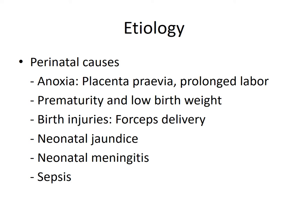The third part of congenital causes is perinatal causes — that is, anoxia during birth, also called birth asphyxia. It can be because of placenta previa, prolonged labour, or cord prolapse, leading to hampered blood supply to the inner ear and brain. Similarly, prematurity and low birth weight babies — especially if birth weight is below 1.5 kg — are more susceptible. Birth injuries from forceps or vacuum delivery can cause trauma or hemorrhage to the inner ear. Neonatal jaundice with hyperbilirubinemia above 20 mg/dL, neonatal meningitis, and sepsis are also among these perinatal causes.